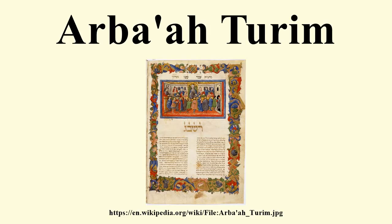In the Arba'ah Turim, Rabbi Jacob traces practical Jewish law from the Torah text and the dicta of the Talmud through the Rishonim. He used the code of Rabbi Isaac Alfasi as his starting point. These views are then compared to those of Maimonides, as well as to the Ashkenazi traditions contained in the Tosafist literature.